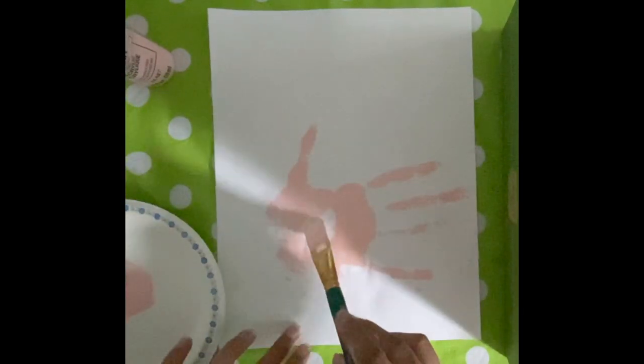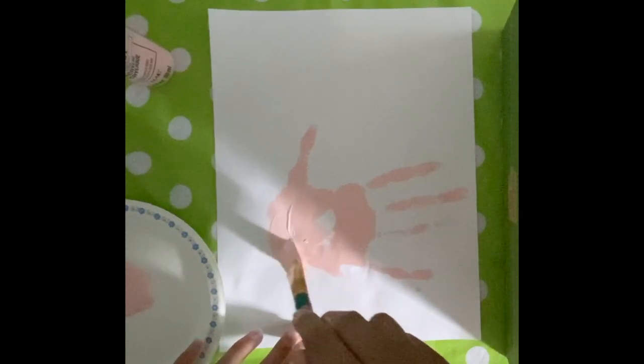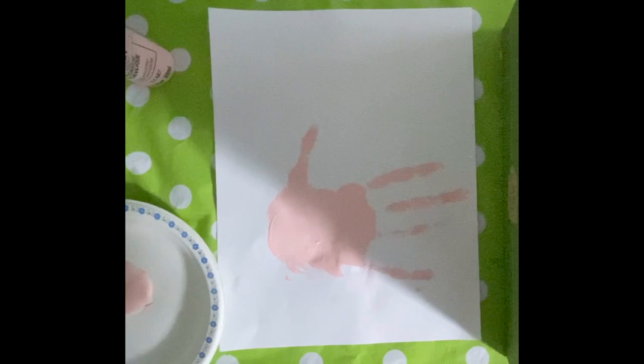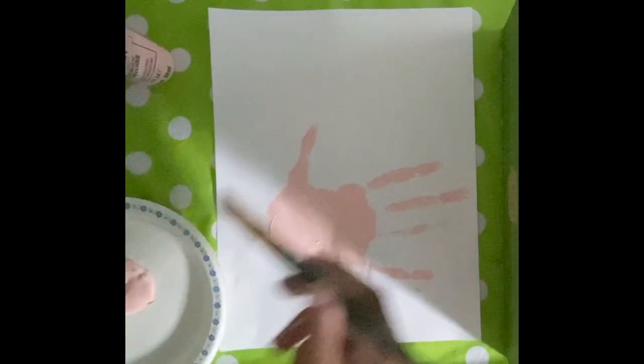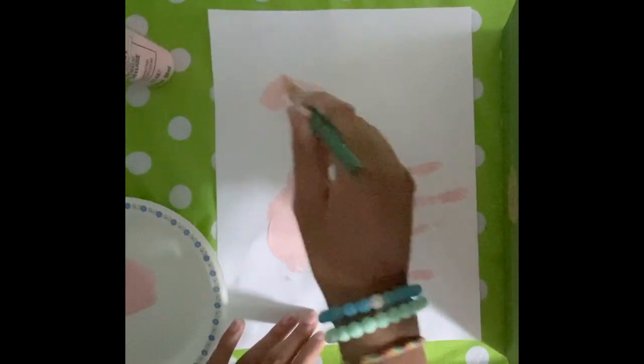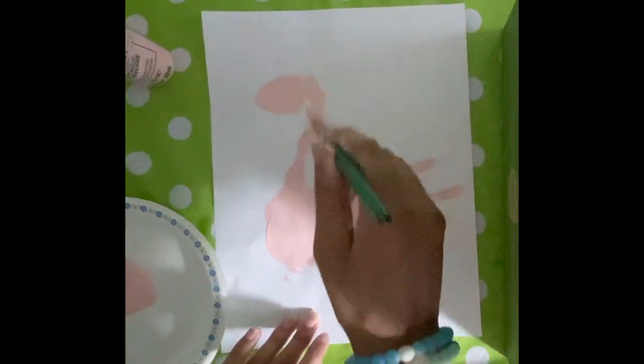Then you can grab your paintbrush and start to fill in the middle hole. And use your paintbrush to draw the head. Extend your thumb line to make the neck and then draw a big circle for the head.